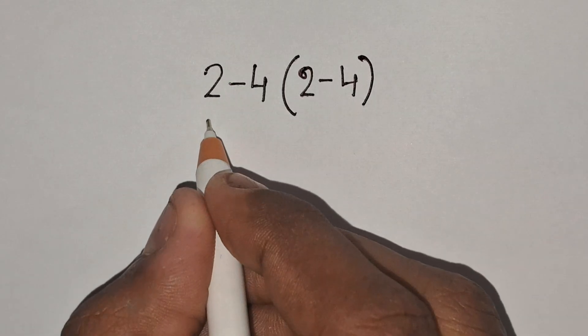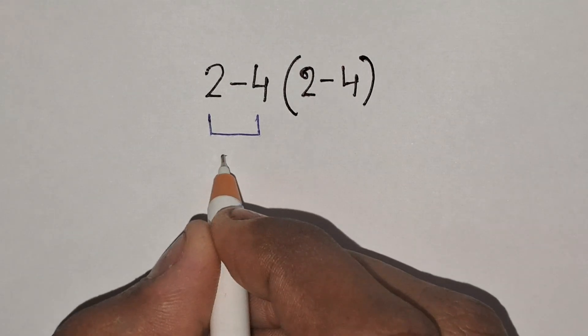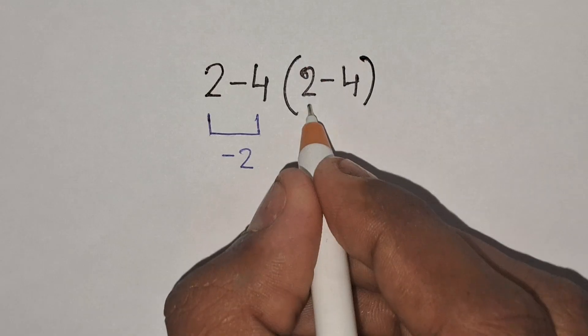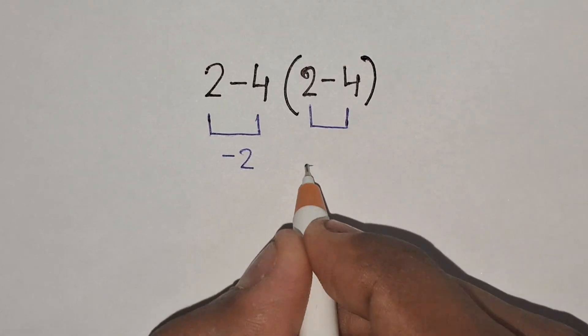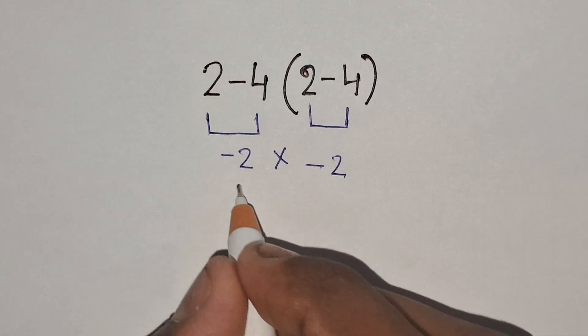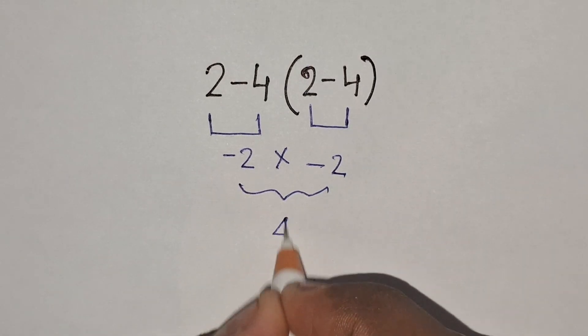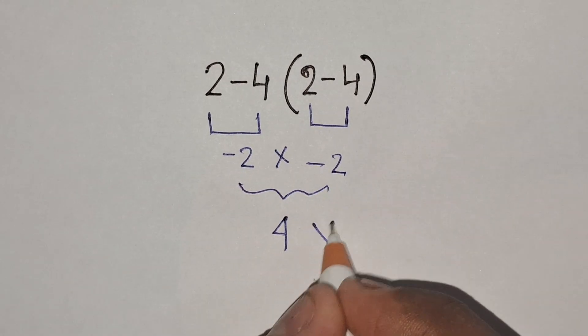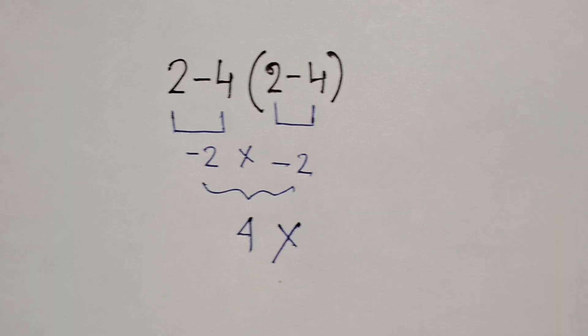2 minus 4 equals minus 2, and again 2 minus 4 equals minus 2. So minus 2 times minus 2 gives us 4, but it's not the correct answer for the expression according to the order of operations.